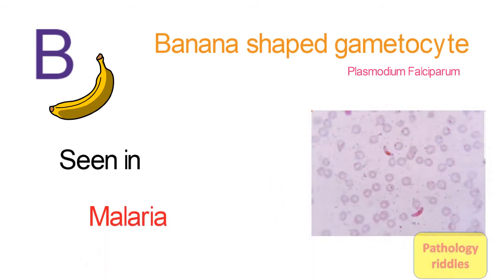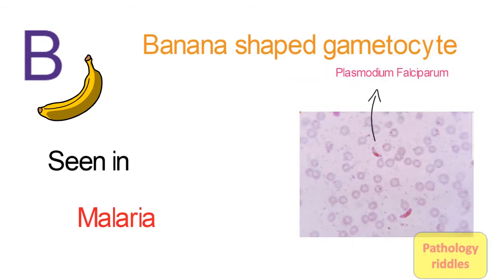As you can see in this peripheral smear, there are RBCs and in between them, these crescent-shaped structures. These are the Plasmodium falciparum species.